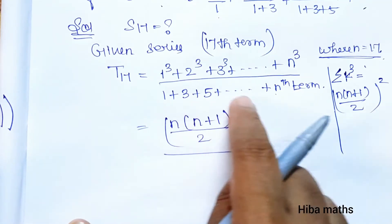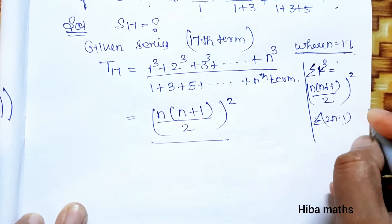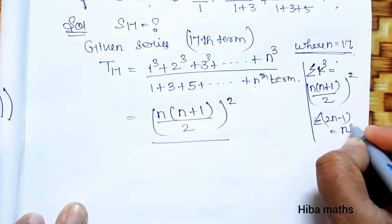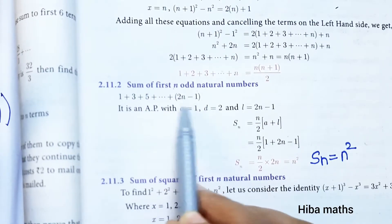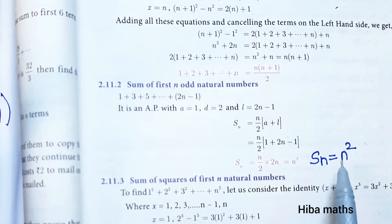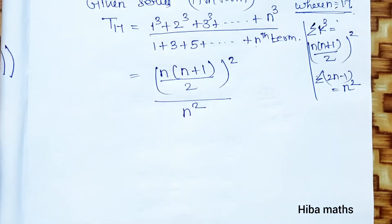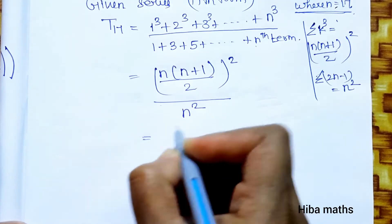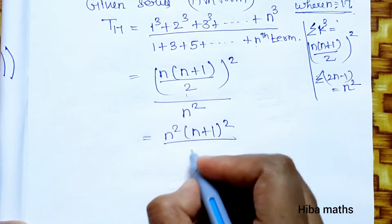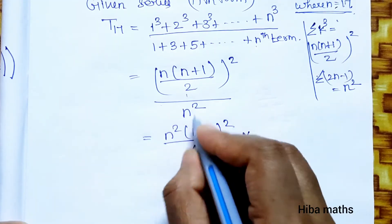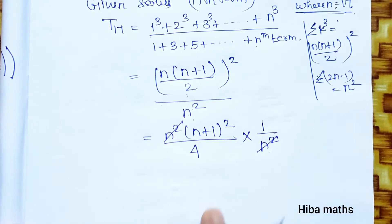The sum of first n odd natural numbers formula is: S of n = n². So the denominator, which is the sum of odd numbers up to (2n−1), equals n². Now n² in the denominator cancels with part of the numerator: [n(n+1)/2]² divided by n² simplifies, and n² cancels.